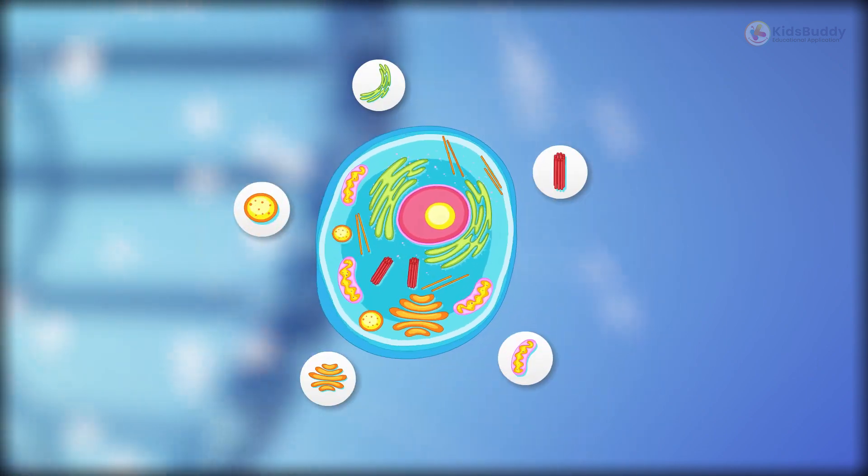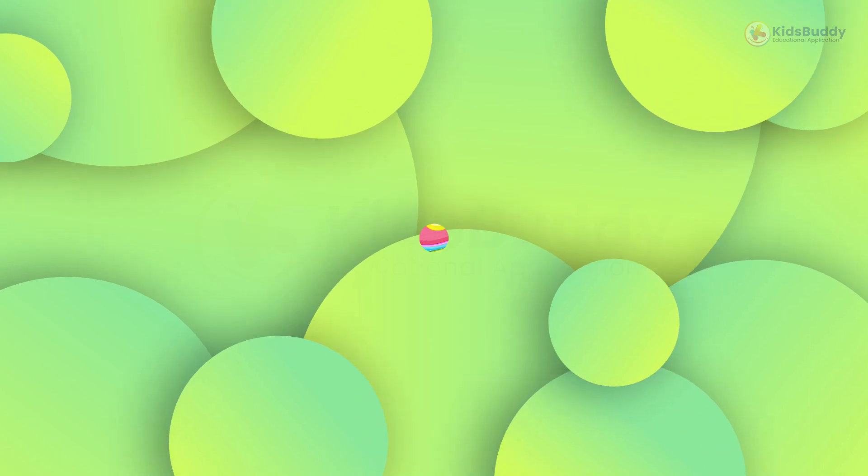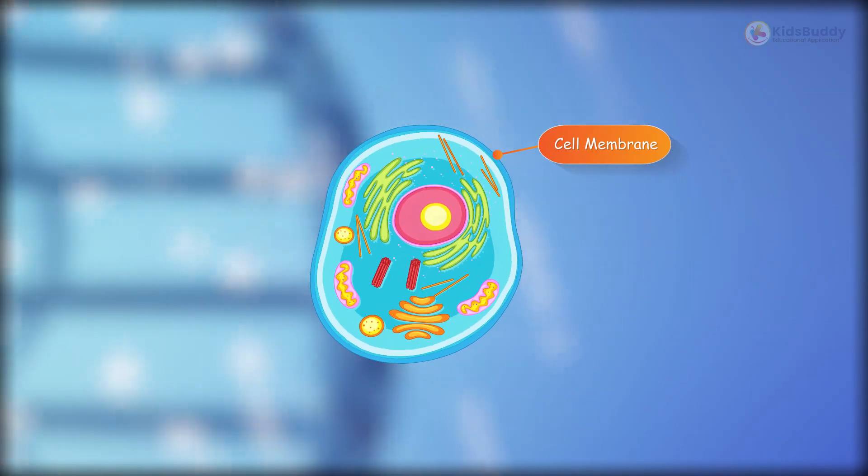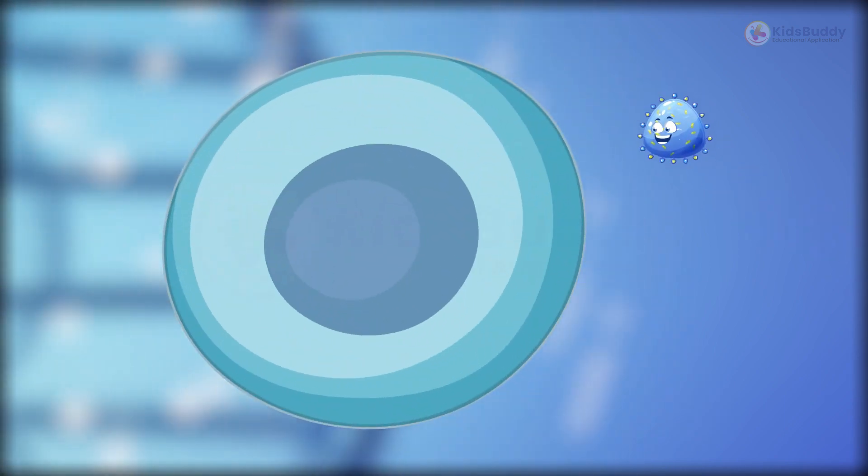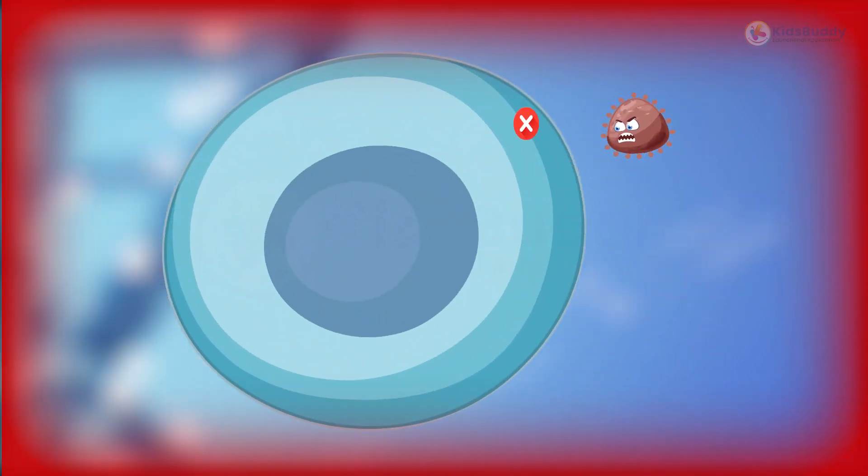But cells are made up of some components. A cell membrane is the outer cover of the cell. It is something like our skin. It allows some substances to seep in and keeps the harmful ones at bay.